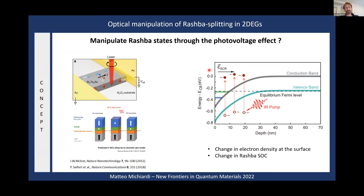Our idea is different: rather than the photogalvanic effect, we use a photovoltaic effect like in a solar cell. We want to understand if ultrafast optical excitation can control the Rashba spin-orbit coupling — the Rashba splitting — and how to detect it. The main idea is that creating electron-hole pairs in the material changes the electrostatic environment felt by the two-dimensional electron gas, hopefully changing the Rashba splitting strength.